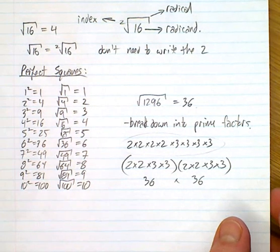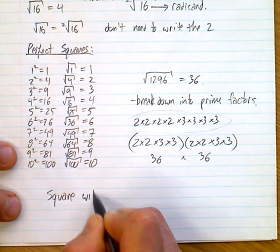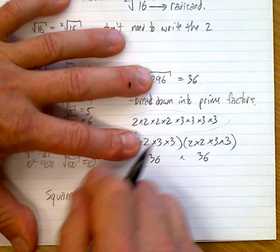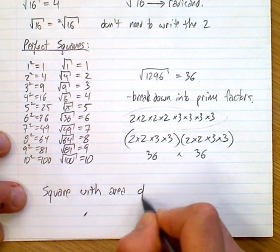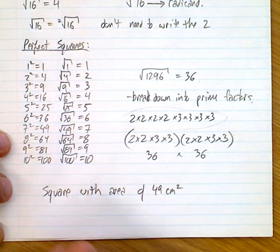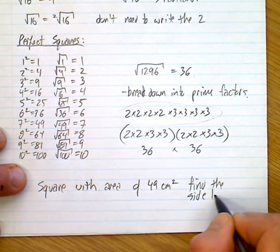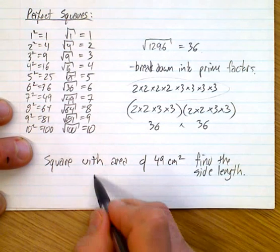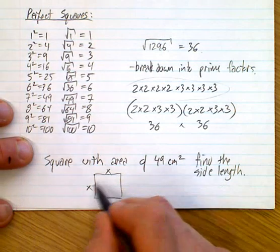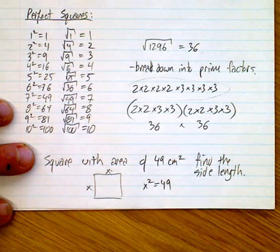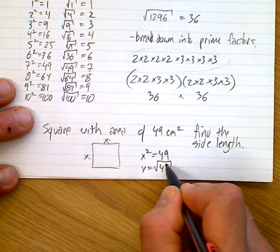If I was going to ask you — given a square with an area of 49 centimeters squared, find the side length — you know that it's going to be the same on both sides, so x times x, which is x squared, equals 49. To find the answer you take the square root, so x equals the square root of 49, which is 7.